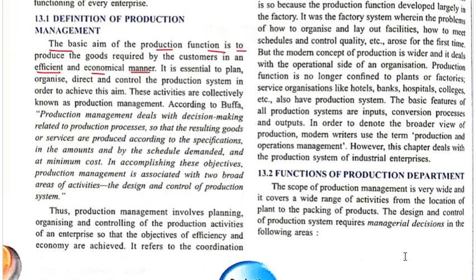According to Buffa, production management deals with decision making related to production processes so that the resulting goods or services are produced according to the specifications, in the amount and by the schedule demanded, and at minimum cost. In accomplishing these objectives, production management is associated with two broad areas of activities: the design and control of the production system.